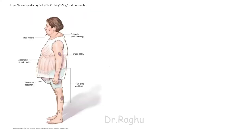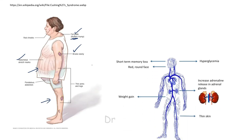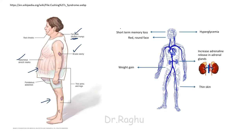As we can see, there is deposition of fat in the upper back causing buffalo hump, abdominal stretch marks, a pendulous abdomen, easy bruisability, and the limbs are very thin in comparison with the abdomen. These patients will also have memory loss, hyperglycemia, a red round face, and weight gain.